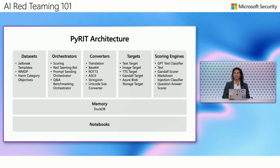We have scoring engines because at the end of the day we're getting a lot of text, images, and video back and we need a way of scoring what we have — this is where the scoring engines come into place. At the foundational layer we have memory, because when you are working at scale, keeping track of what you send, when you send it, and who did it can be quite challenging. Then if you go to our repository, you'll see that we have a ton of different notebooks that you can leverage to understand the different components of Pirate.